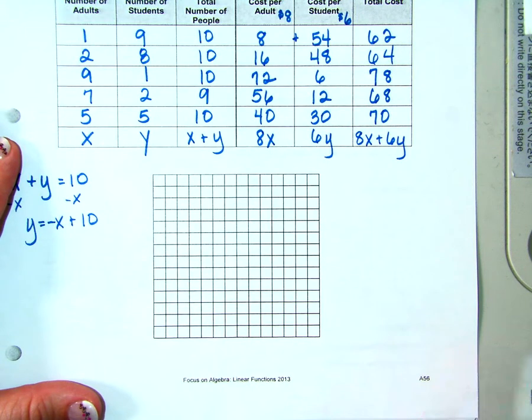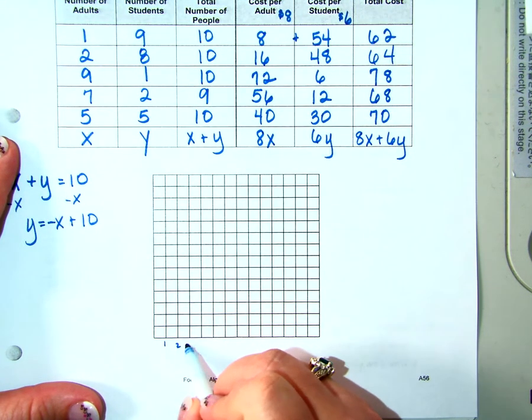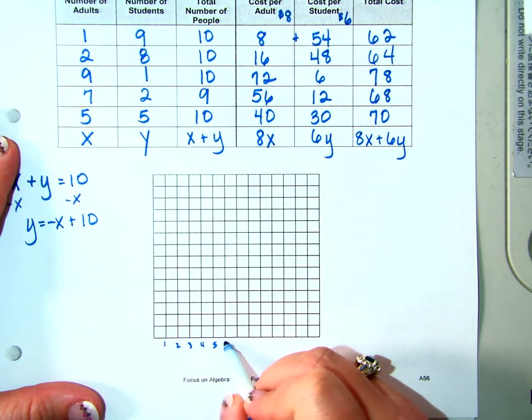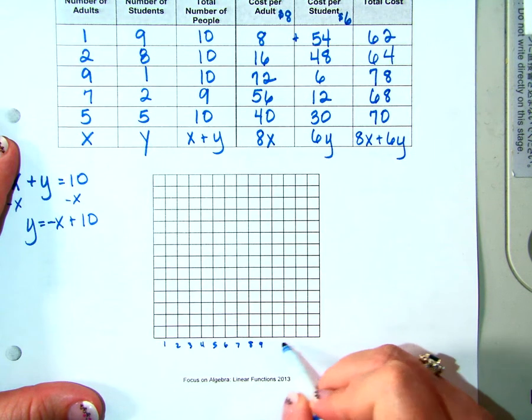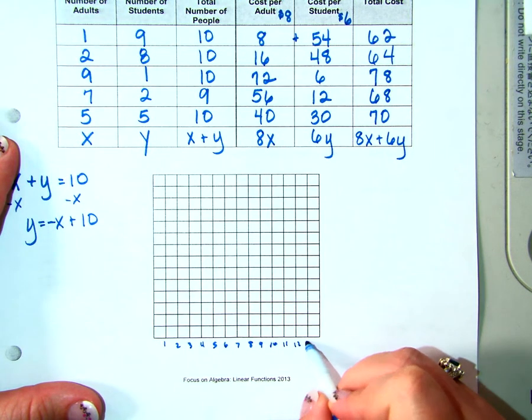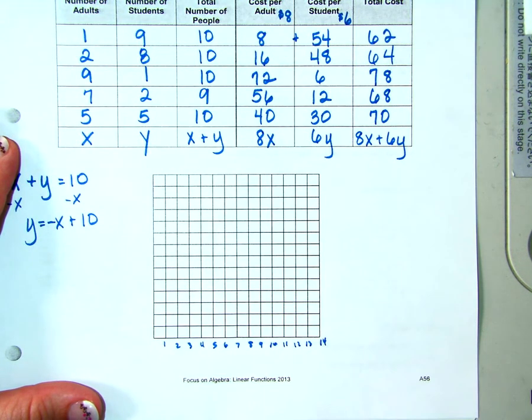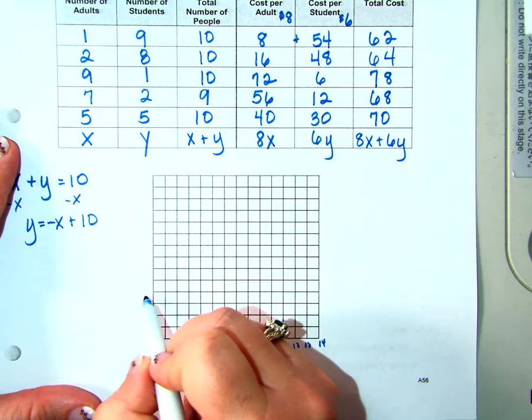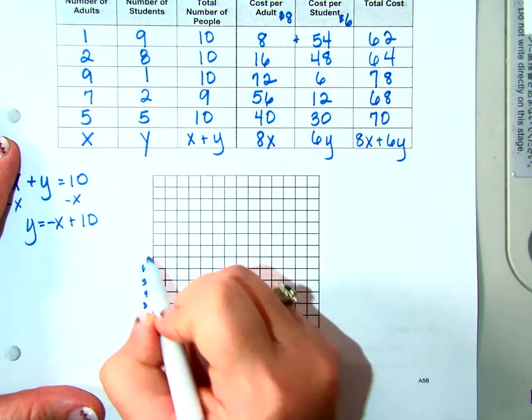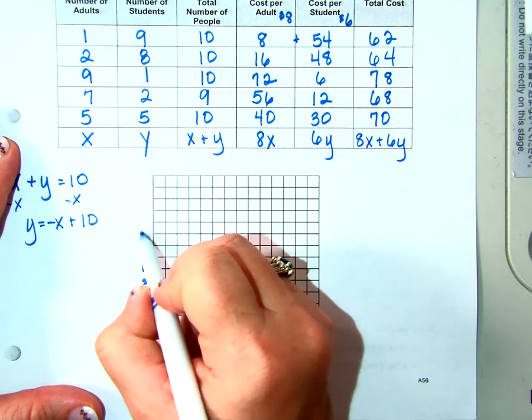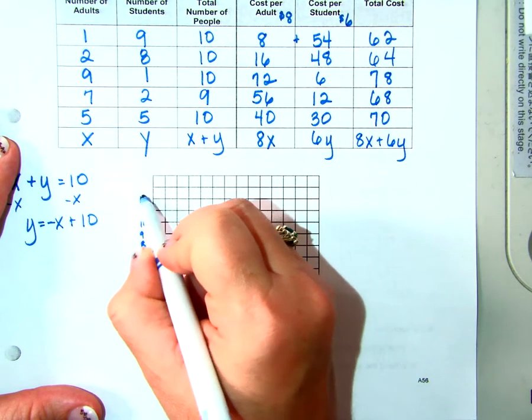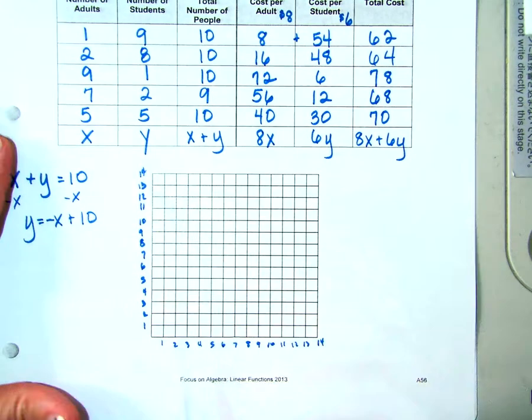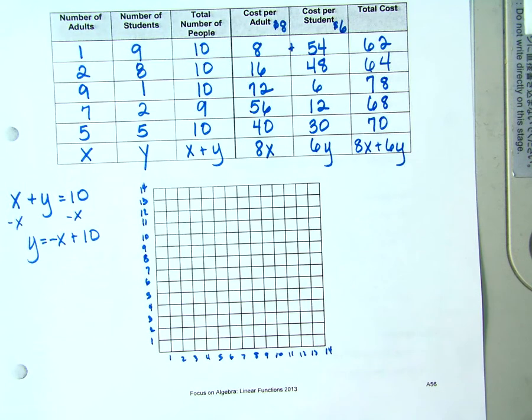I know my Y-intercept is ten and I know my slope is negative one. Can I graph it right now? Not yet, can I? What do I have to do before I can start graphing? I have to prepare my graph. How am I going to scale this? X and Y. Look at our X and Y's. Can I go to ten or however far? Can I just count by ones? One, two, three, four, five, six, seven, eight, nine, ten, eleven, twelve, thirteen, fourteen. One, two, three, four, five, six, seven, eight, nine, ten, eleven, twelve, thirteen, fourteen.